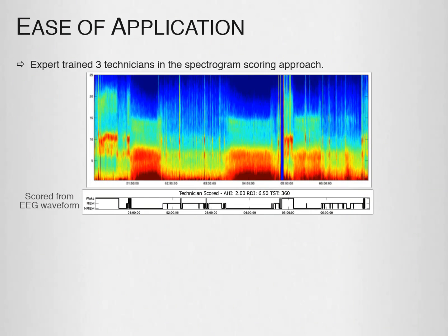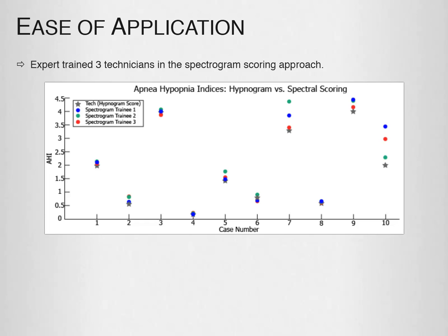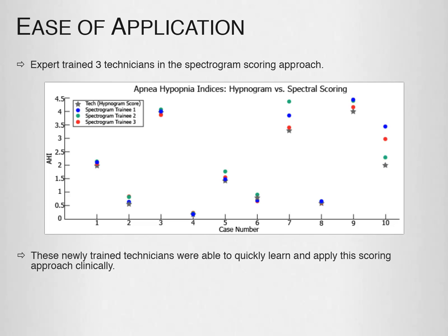The expert also trained three technicians in the spectrogram scoring approach. Here's one subject's sleep data along with the official technician-scored hypnogram using the traditional sleep staging approach. The scoring performed by the three newly trained technicians using the spectrogram closely resembles the hypnogram from the traditional approach. It should be noted that it typically takes several years to train a sleep technician to score with an acceptable level of accuracy — in this study, the technicians received only a few hours' training using materials nearly identical to these modules. The new trainees were also asked to score the apnea hypopnea indices for 10 cases, and for the most part these newly trained technicians were able to quickly learn and apply the scoring approach clinically.